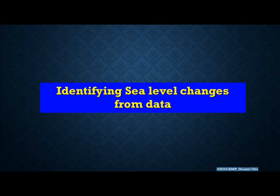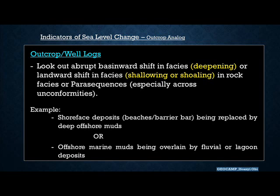Let's talk about how to identify indicators of sea level changes from data, starting from outcrop. On an outcrop, one thing to look out for is any evidence of a rapid or abrupt shift in facies — a basinward shift in facies, which is also called deepening of the facies, or a rapid landward shift, which is called shallowing. So if you have surface or upper facies — typically from beach or shallow environments — being overlaid by deep offshore muds across that interface, it's a shift in facies indicating a deepening upward or basinward shift.